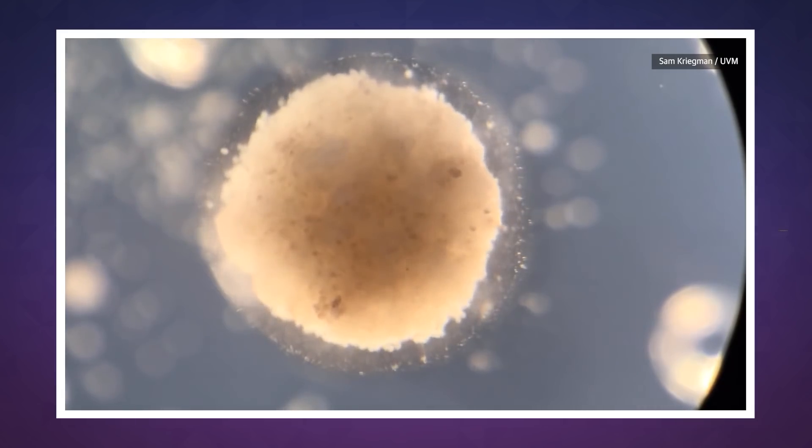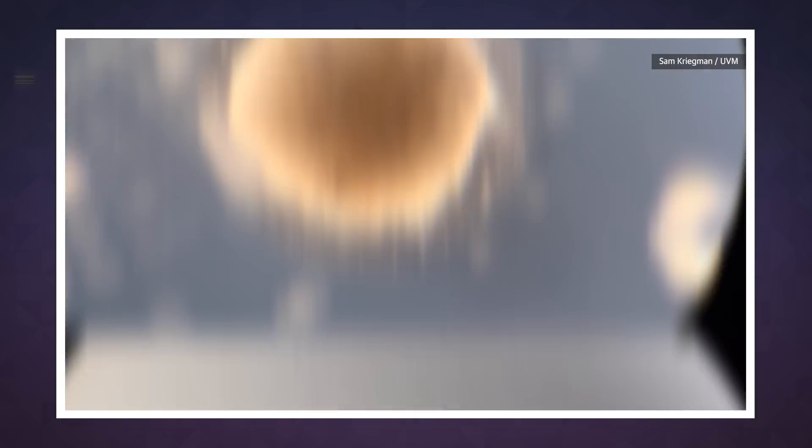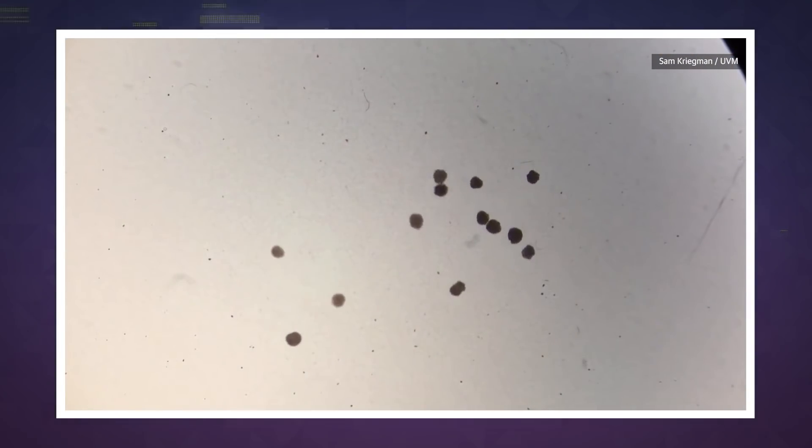The first batch of samples were designed to perform very basic tasks, like moving in a certain direction, with frog skin cells providing the basic passive structure of the xenobots, while heart and muscle cells gave them the ability to move. Later versions were built with holes in their centers, which reduced drag and even allowed them to carry payloads.